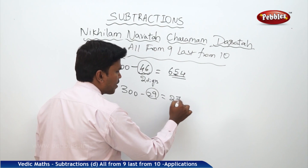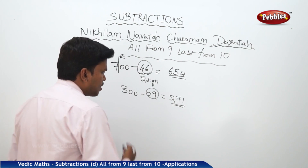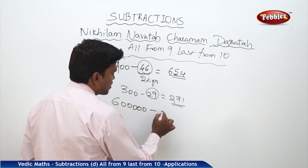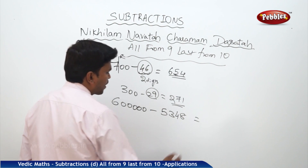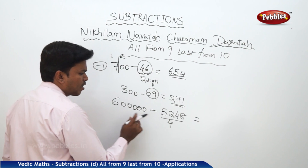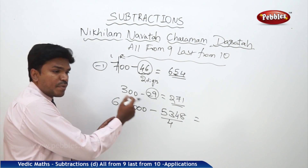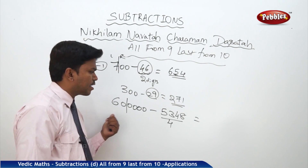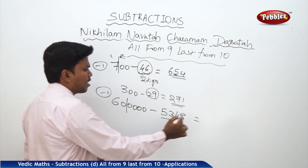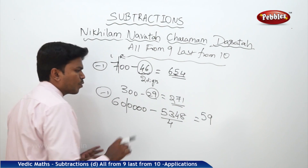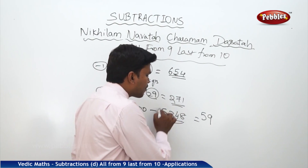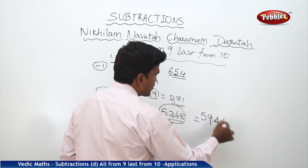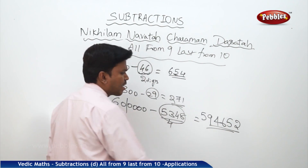Now, 6,00,000 minus 5,348. How many digits in the subtrahend? Four digits. Make a partition from the right side: 1, 2, 3, 4. The left part is 60. If 60 is reduced by 1, you get 59. Now apply 'all from nine, last from ten' to the subtrahend 5,348: for 5 it is 4, for 3 it is 6, for 4 it is 5, and last from 10 for 8 is 2. So my answer is 5,94,652.